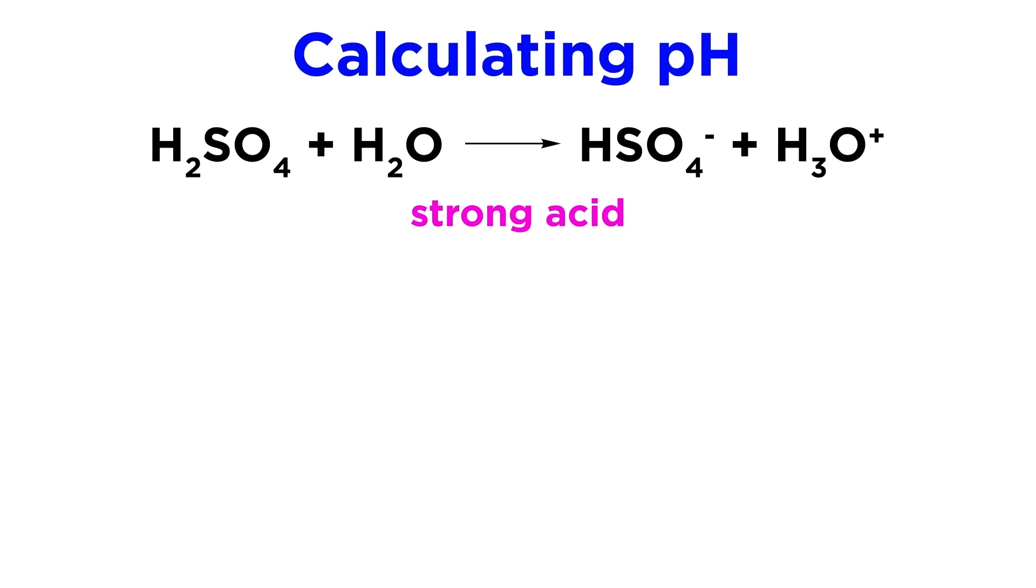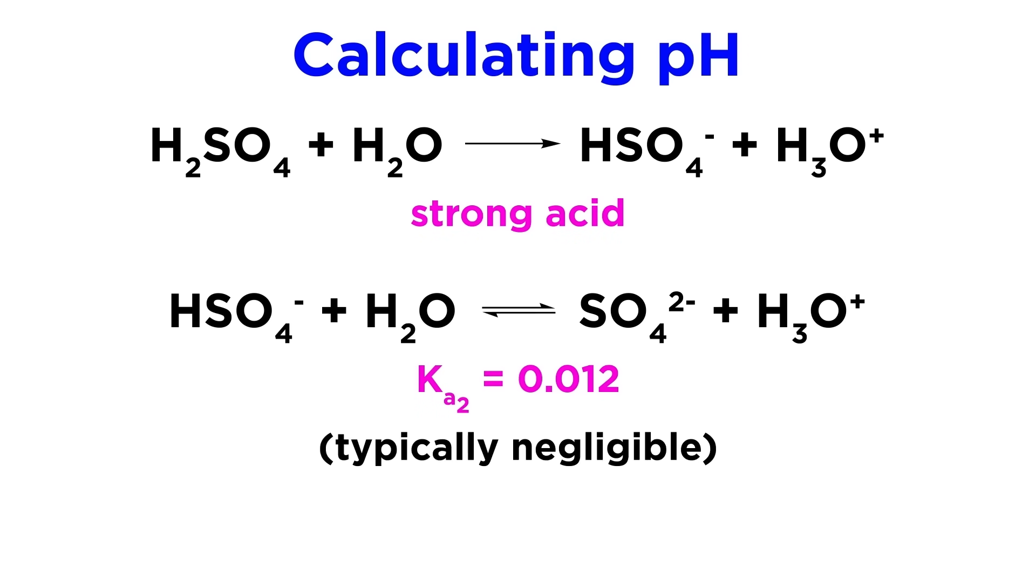Sulfuric acid is an example of a diprotic acid that is a strong acid for its first deprotonation to produce the bisulfate ion, but a weak acid for its second deprotonation to produce the sulfate ion, with a Ka of 0.012. And again, for most solutions, the second deprotonation will be negligible when compared with the first for any relevant calculations.